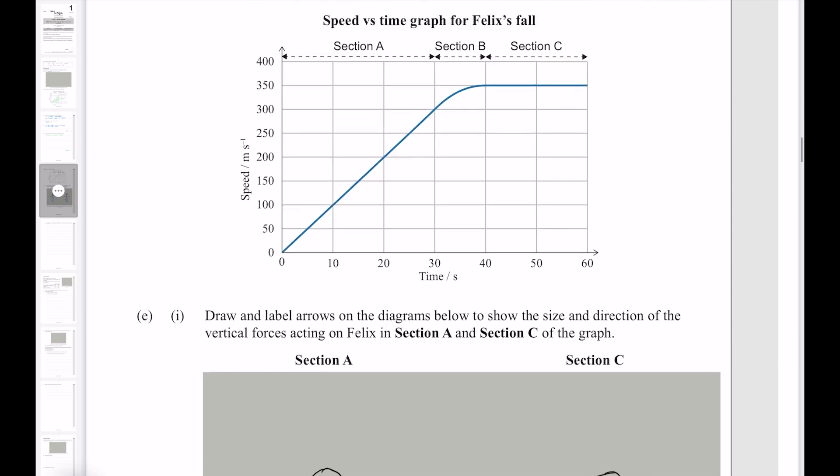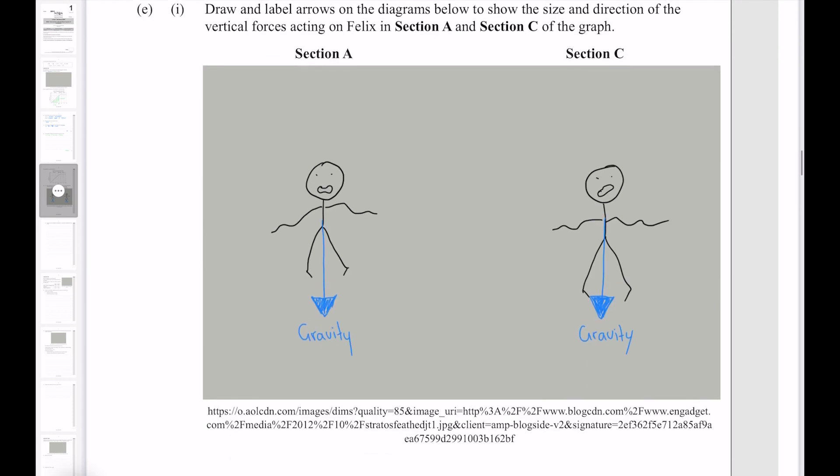Now in section A, we see that Felix is accelerating. He is accelerating because there is an unbalanced force downwards. Meaning that our larger force is our downwards gravity. Because Felix is falling through an atmosphere, however, we're going to have some air resistance pushing upwards.